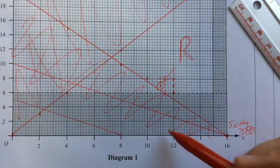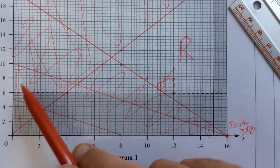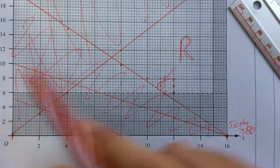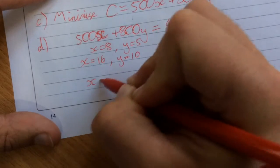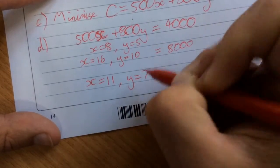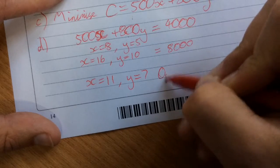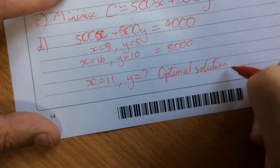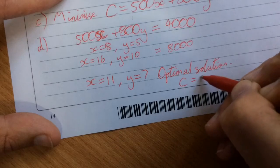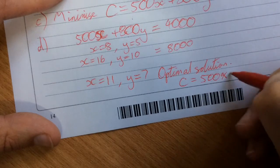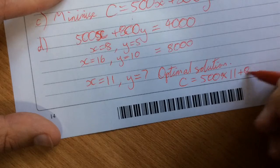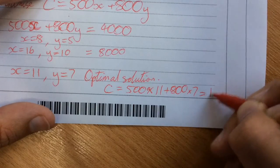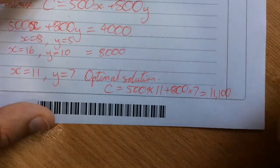The next integer point corresponds to X equals 11 and Y equals 7. This is our optimal solution. Calculating the cost: C equals 500 times 11 plus 800 times 7, which gives £11,100. And we're done.